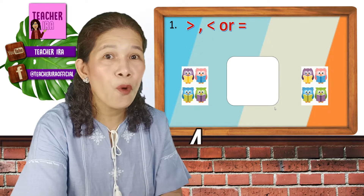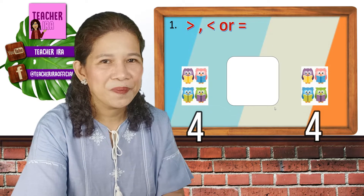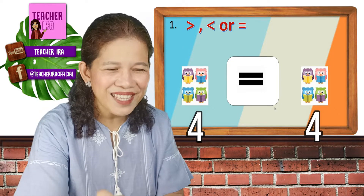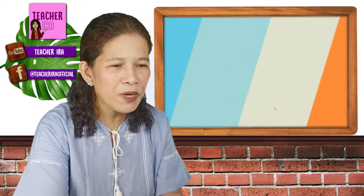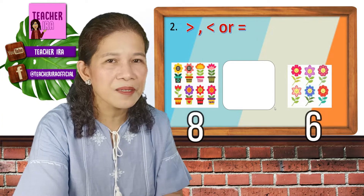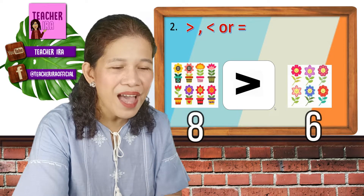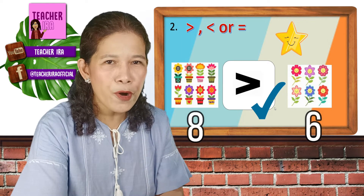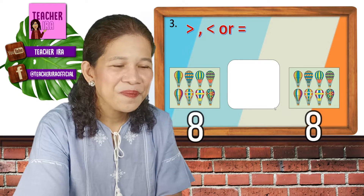Number 1: 4 and 4. Oh, just like what we had a while ago. Is it greater than, less than, or equal? Yes, it's equal. Correct. You have a star for that. Now, number 2 — greater than, less than, or equal? 8 and 6. Of course, you know that for sure — that's greater than. Another check for you, kids. And a star. Number 3: 8 and 8. That's equal. Check, check, check. And a star. Very good.